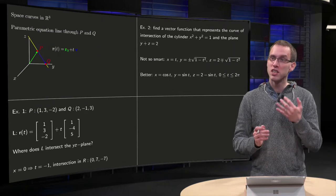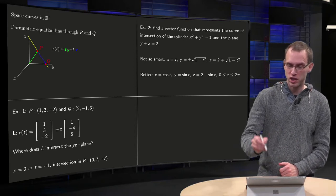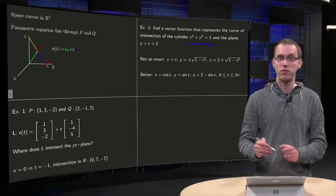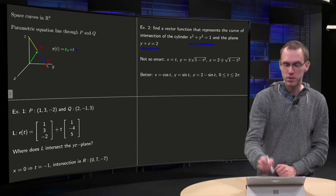Let us now do a slightly harder example. Find a vector equation that represents the curve intersection of the cylinder x squared plus y squared equals 1, so it looks like this, and the plane y plus z equals 2.